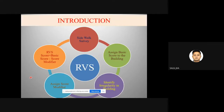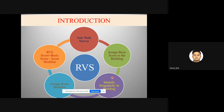Rapid Visual Screening (RVS) is a sidewalk survey of any building conducted from streets, sometimes with access to the interior to assess the lateral load resistance system. A basic score is assigned based on type of construction and material used. Various structural irregularities are ascertained, score modifiers are assigned for such irregularities, and the RVS score is calculated by subtracting the score modifier from the basic score. The RVS score is then related to the collapse probability of that building.